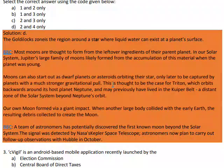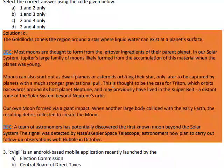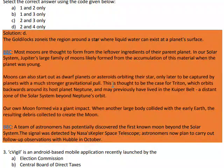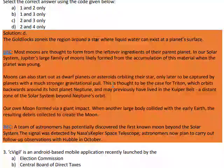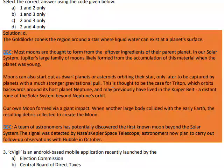Most moons are thought to form from the leftover ingredients of their parent planet. In our solar system, Jupiter's large family of moons likely formed from the accumulation of this material when the planet was young.